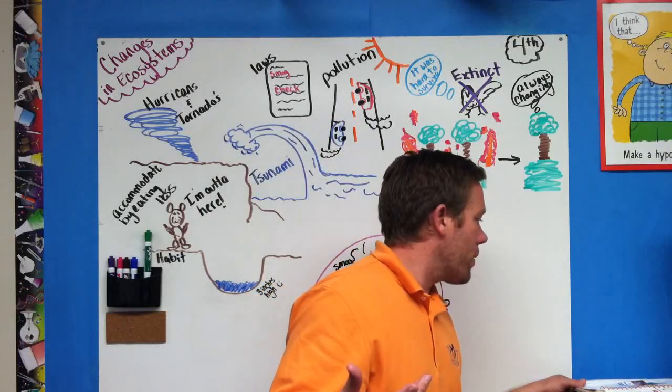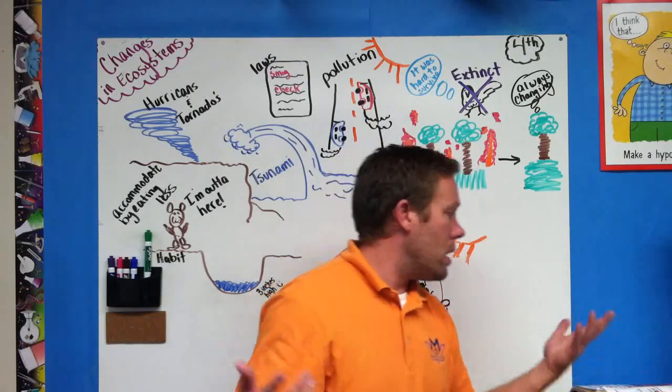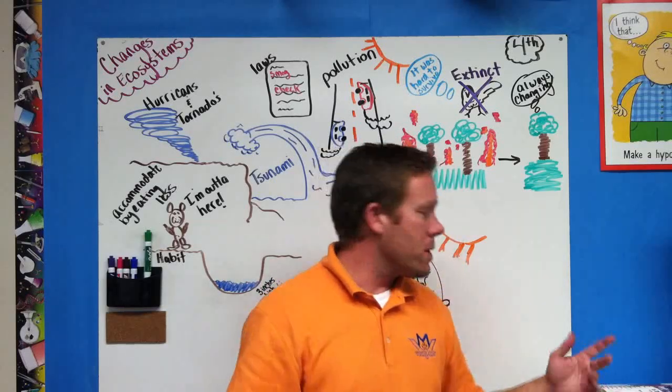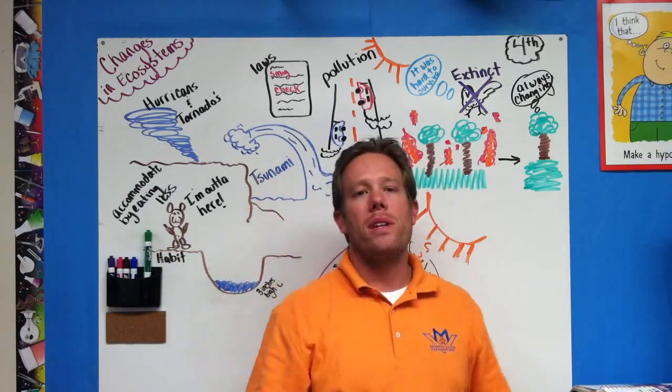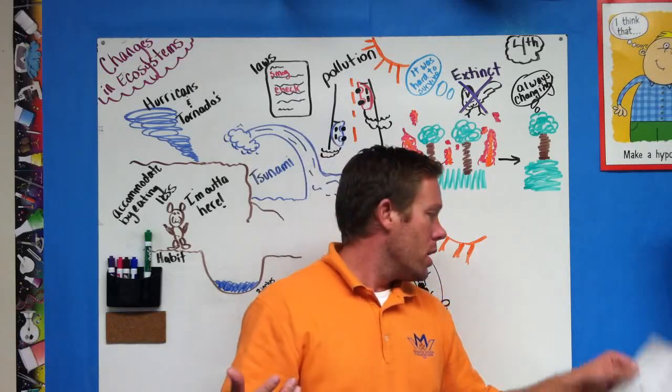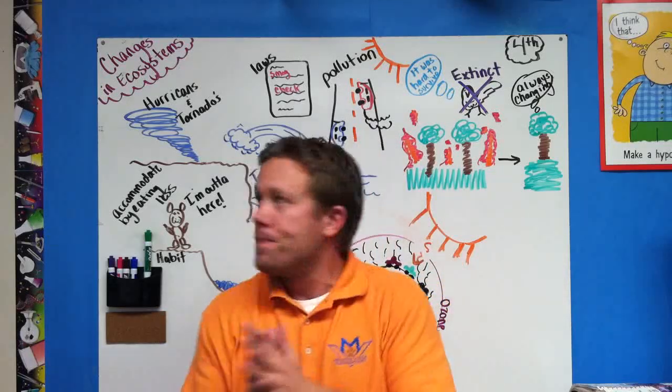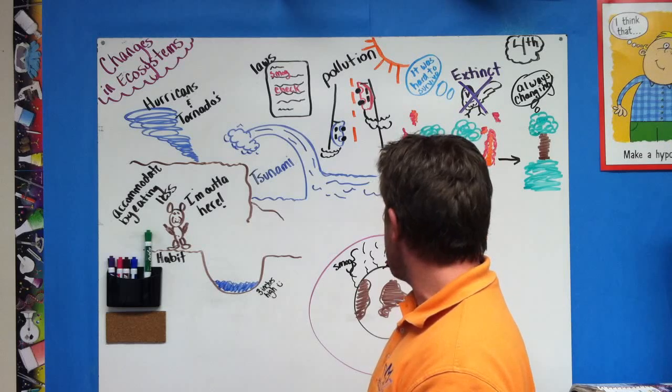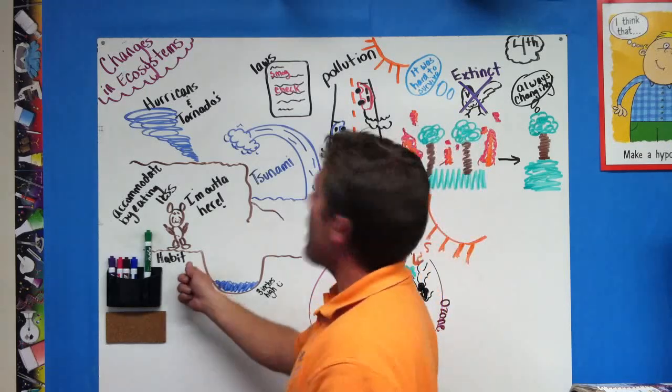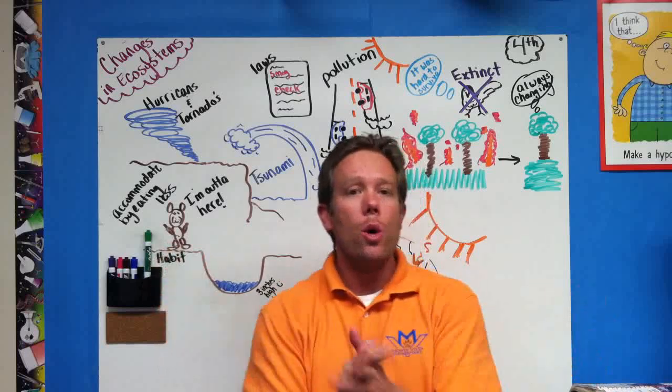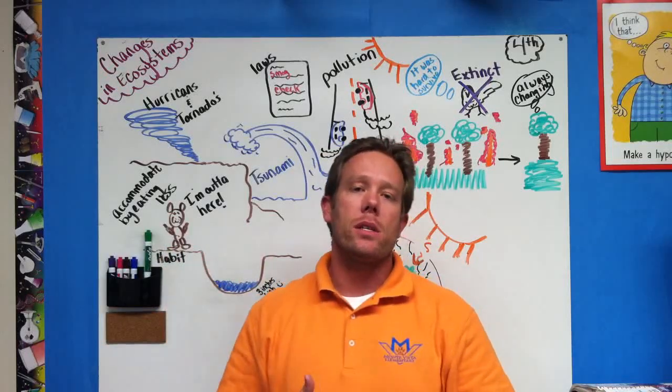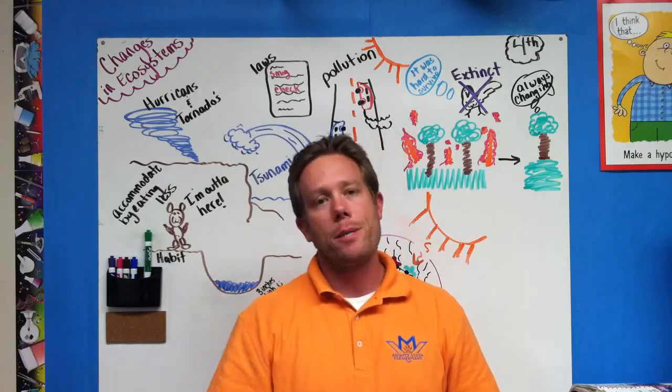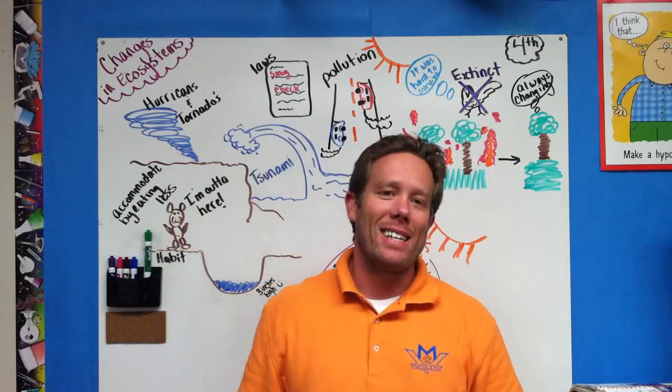I think we've pretty much covered a whole bunch of the concept. We've talked about being endangered. We've talked about extinction. We've talked about accommodation. We talked about all the natural disasters that can happen that can change an ecosystem. We talked about them being always changing. We talked about laws. And we talked about habits. So you are ready to go for this changes in ecosystem test. If you have any questions, contact me on Edmodo or Facebook. Other than that, I look forward to seeing you guys in class. Bye.